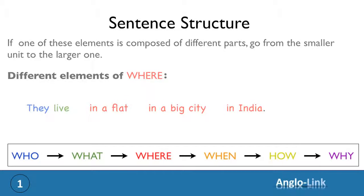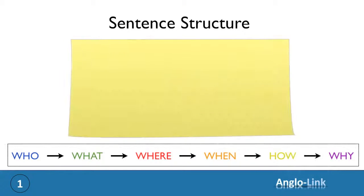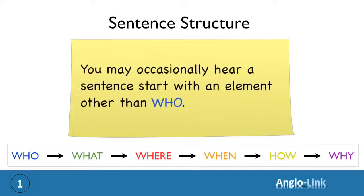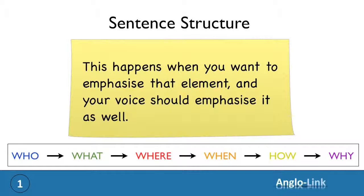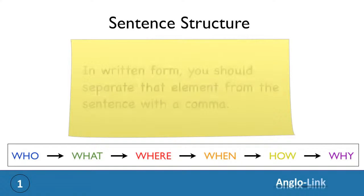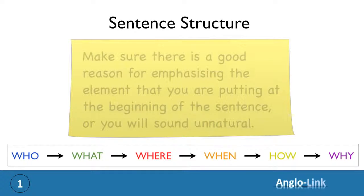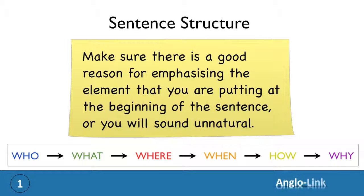Right. There is a specific case I'd like to mention now. You may occasionally hear a sentence start with an element other than who. This happens when you want to emphasize that element. And remember that your voice should emphasize it as well. And in written form, you should separate that element from the sentence with a comma. Just make sure that there is a good reason for emphasizing the element that you are putting at the beginning of the sentence, or you will sound unnatural.